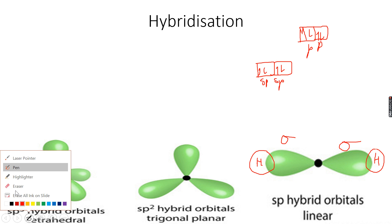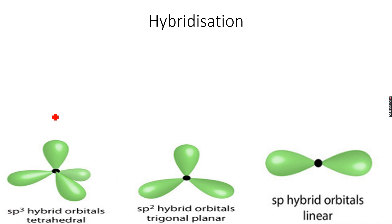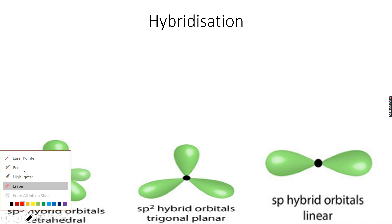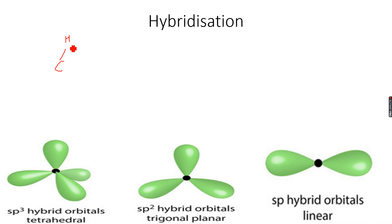For SP3 hybridization, whenever there are all single bonds, those are sigma bonds. All single bonds are sigma bonds. Since SP3 has all single bonds, these are all sigma bonds. Now, drawing SP3 correctly requires a tetrahedral shape using wedges and dashes — this goes like this, this goes like this, this goes like this, and this goes like this. A wedge and a dash represent different spatial orientations.